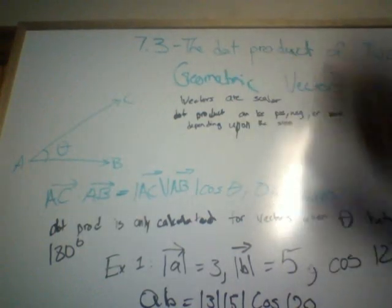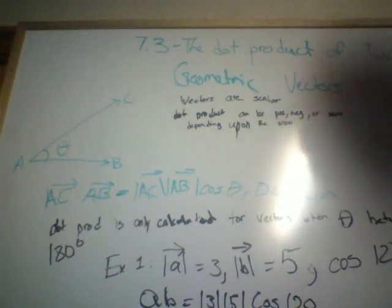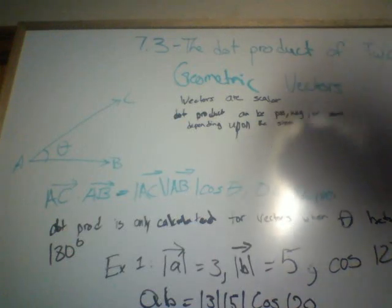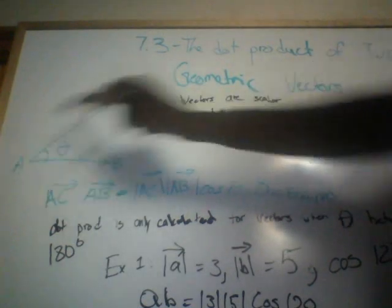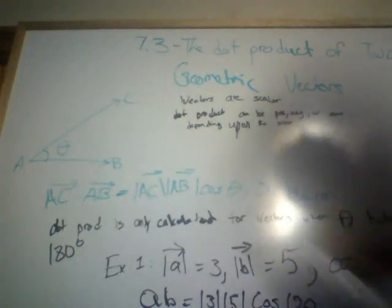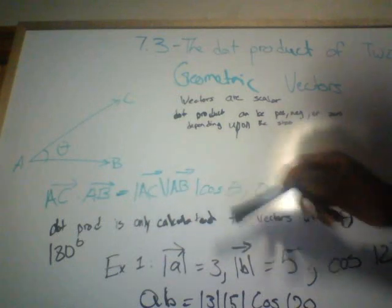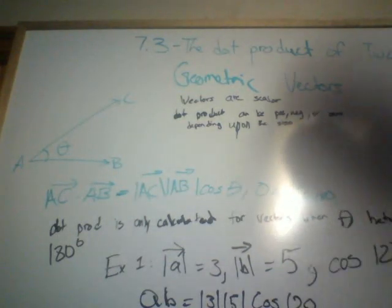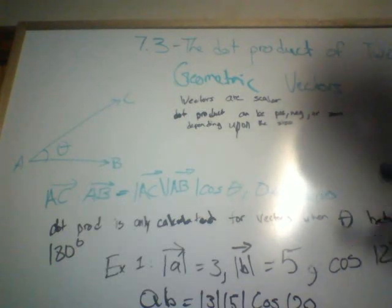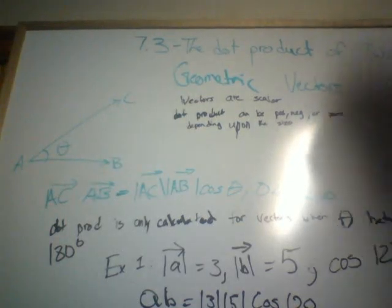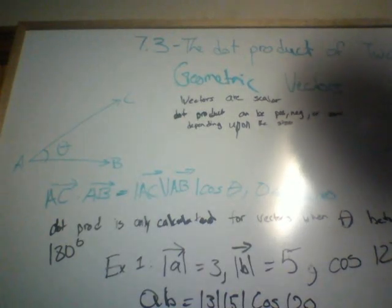Today I'm going to be talking about 7.3, the dot product of two geometric vectors. Vectors are scalars, and dot products can either be positive, negative, or zero depending upon the size. Vector AC times vector AB equals the magnitude of vector AC times the magnitude of vector AB times cos theta, where 0 is less than or equal to theta, which is less than or equal to 180 degrees.